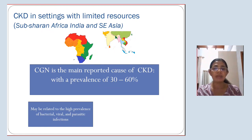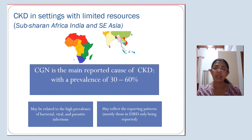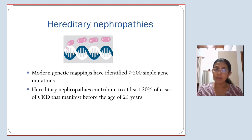Even though CAKUT was reported as the leading cause of CKD in the developed Western world, chronic glomerulopathies is the main reported cause of CKD in many reports coming from Sub-Saharan Africa, India, and Southeast Asia, with a prevalence of 30 to almost 60%. This may be related to the high prevalence of bacterial, viral, and parasitic infections in these countries, or it may reflect the reporting patterns where mostly those in end-stage renal disease are being reported.